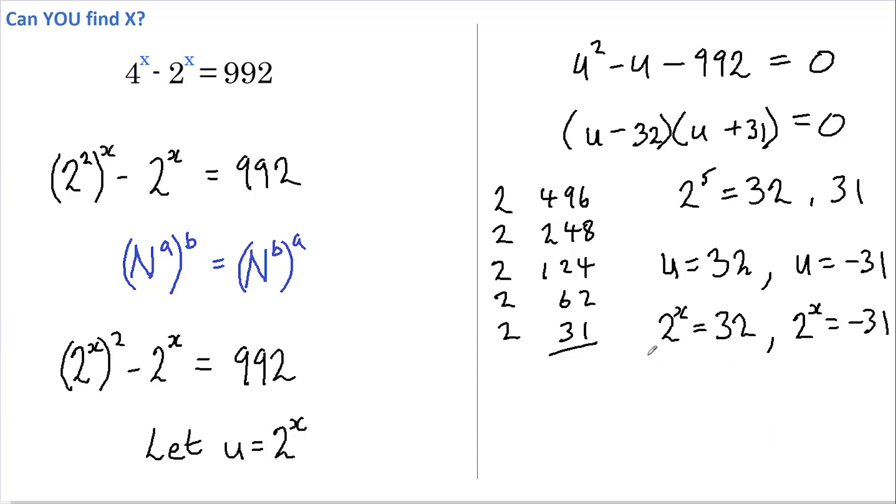We already know that 32 is 2 to the power of 5. Therefore, 2 to the x equals 2 to the 5, or 2 to the x equals negative 31. But since no value of x will give you a negative number, this is not applicable.